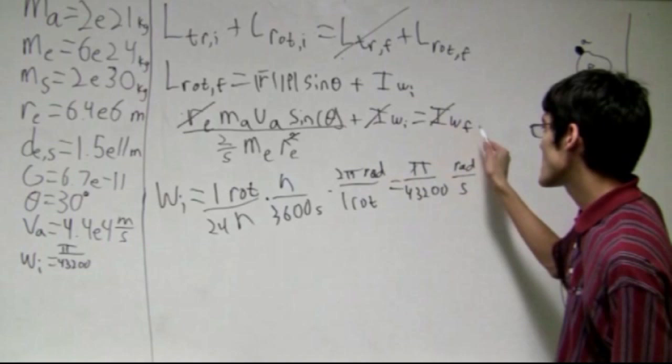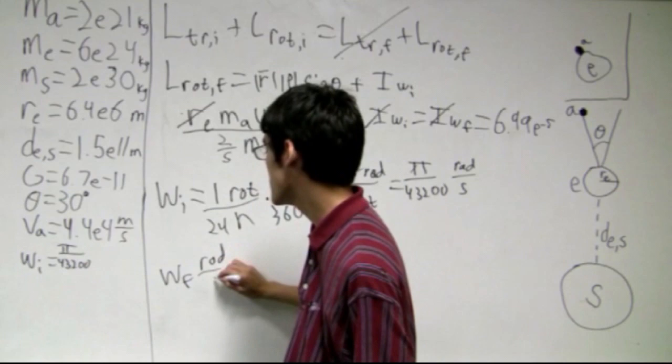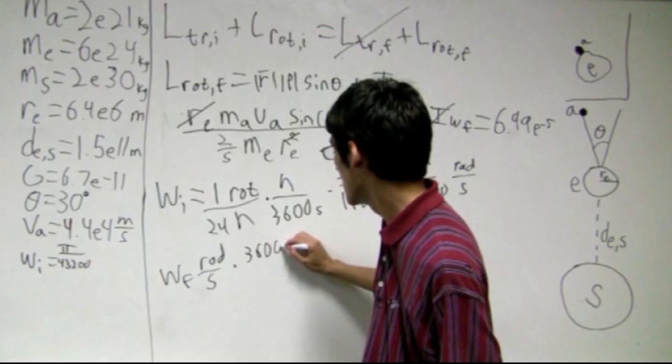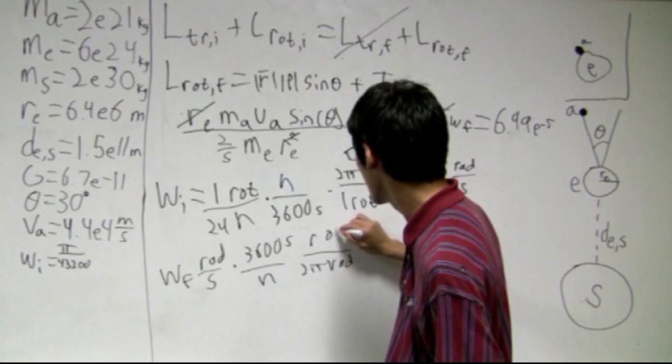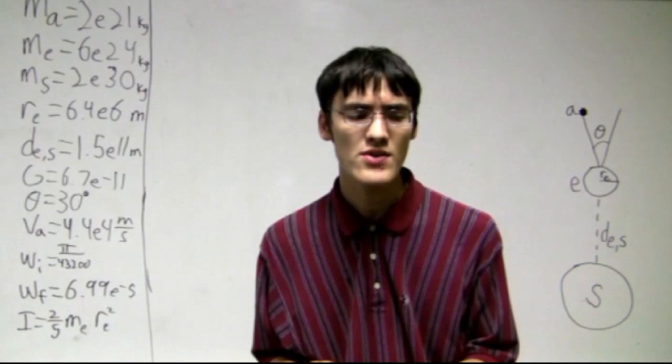So now we have all the information we need to solve for omega_f, which is going to be 6.99×10^-5 radians per second. So we have omega_f radians per second, and we need to translate that into rotations per hour. So convert that into hours and 2π radians per rotations. So we have it in rotations per hour, but we need it to be in hours per rotation. So invert it, and we get 24.98 hours per rotation.